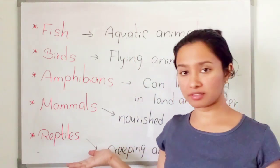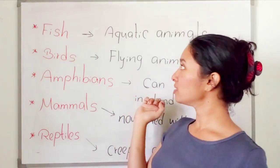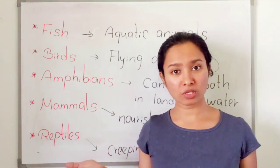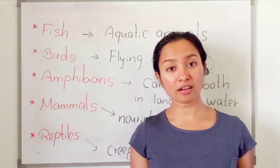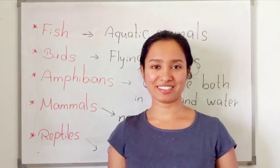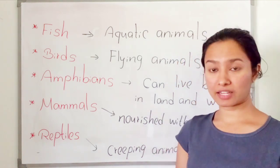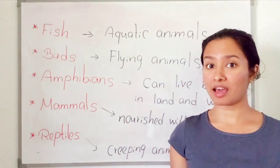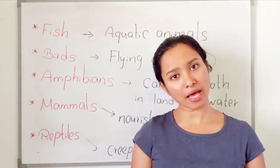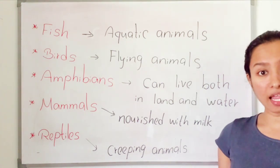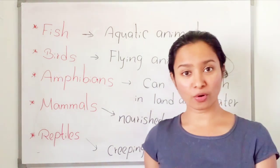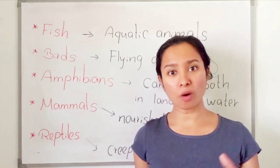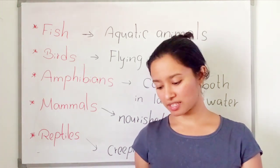Fish are the aquatic animals — dolphins, tunas, whales, and sharks are fish. Birds are the flying animals — parrots, crows, and many others. Amphibians are animals which can live both on land and in water — mostly frogs, and also toads and salamanders. They can live both in water and on land.